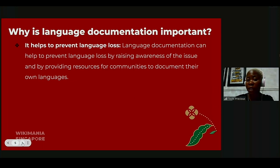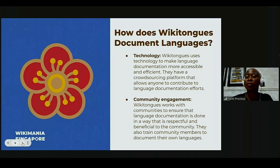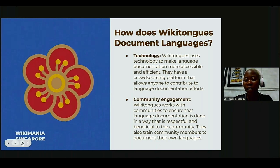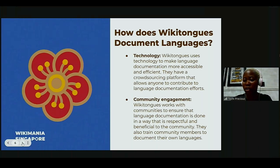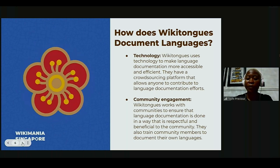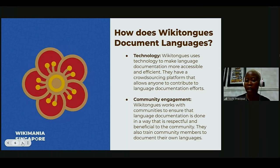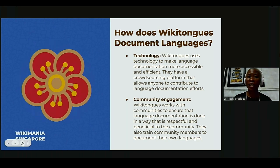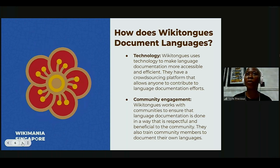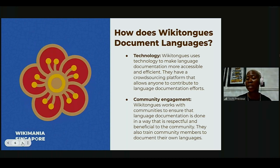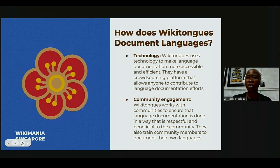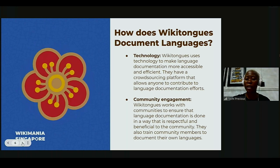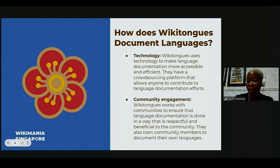I know of a language whose last living speaker died in 1992, and since then it's been very hard to find other living speakers. Now, how does Wikithongs actually document these languages? The first way is by using technology to make documentation more accessible and efficient. There's a crowdsourcing platform and what we call a seed bank, where a network of linguists document languages and upload them for use. There are over 700 languages in those seed banks, available as videos, audios, and more.